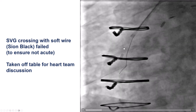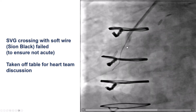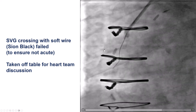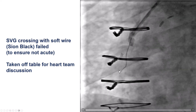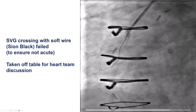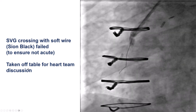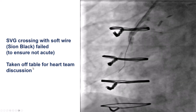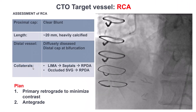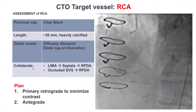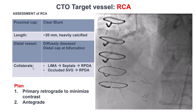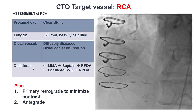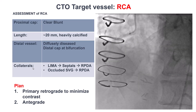During the diagnostic angiogram, we made a brief attempt to advance a soft wire through the vein graft in case the vein graft occlusion was acute. However, the vein graft could not be wired easily with the soft wire. As a result, the procedure was stopped and the patient was taken off the table, followed by a heart team discussion. He was not considered to be a good candidate for repeat coronary bypass, and he was subsequently referred for PCI of the right coronary artery CTO.